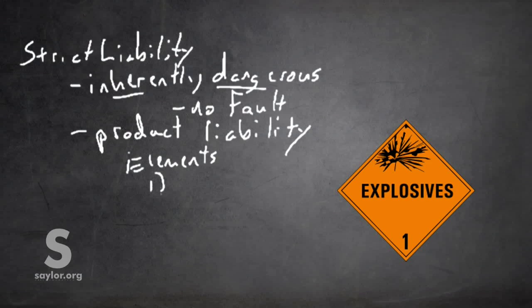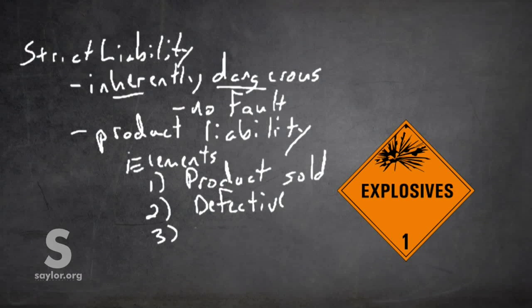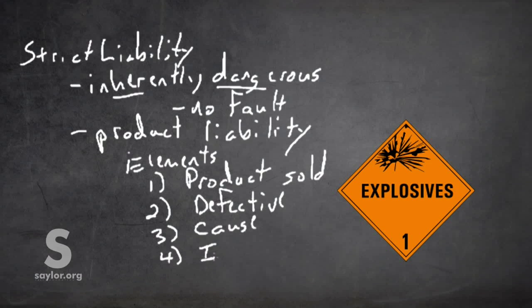And the elements of a product liability tort, which again generally are strict liability torts, are, first, product was sold. Second, product was defective when sold. Third, product was the cause of the plaintiff's injury. And four, there was in fact an injury or harm.